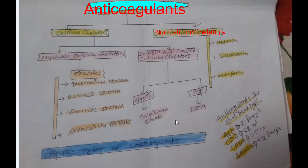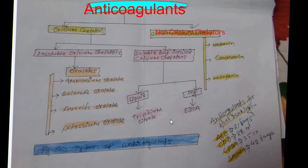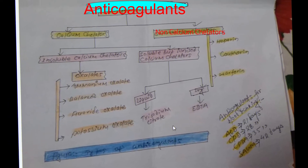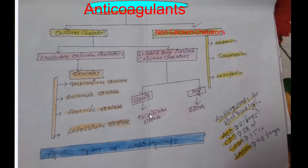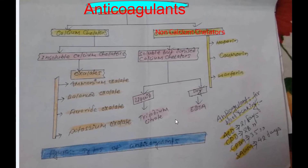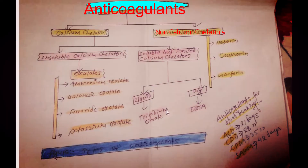The ratio of trisodium citrate in PT, APTT, FDP, and fibrinogen tests is 1 to 9. Trisodium citrate is not used for blood cell count or hemoglobin estimation. We can say this anticoagulant is used for coagulation profile tests.